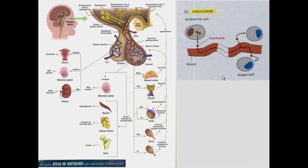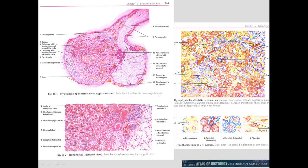In the endocrine system, one cell produces a hormone that travels through the bloodstream to affect a target cell at some distance, and that target cell may produce hormones that inhibit further stimulation. Here we see the pituitary with the pars nervosa, pars distalis, pars intermedia, infundibular stalk, and pars tuberalis. In the pars distalis, or anterior pituitary, you have chromophobes that do not stain, acidophils that appear red, and basophils with a bluish cytoplasm. In the pars intermedia there is colloid material.